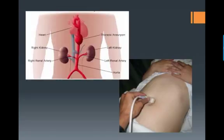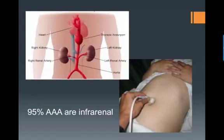Just to review — you have a picture of your aorta here, and you want to make sure to scan from the proximal aorta to the distal aorta where it bifurcates into your iliacs. This is because 95% of abdominal aortic aneurysms are infrarenal. You're going to use either your curvilinear probe or your phased array probe for this.